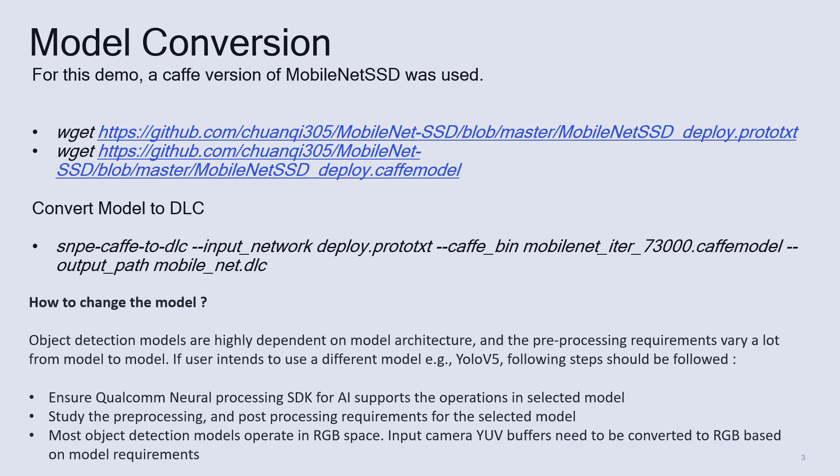The user needs to study the pre-processing and post-processing requirements for the model they select. Also, most object detection models operate in RGB color space. Camera normally inputs YUV buffers and they need to be converted to RGB space based on the model requirements. This conversion is not the same for every model.